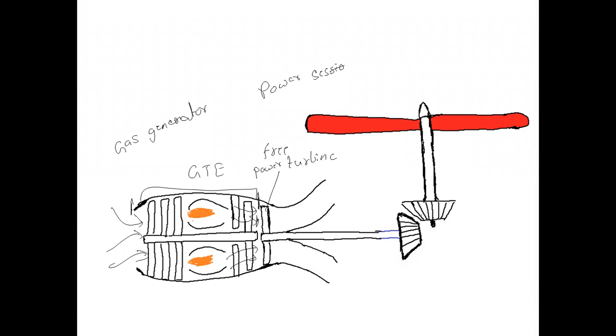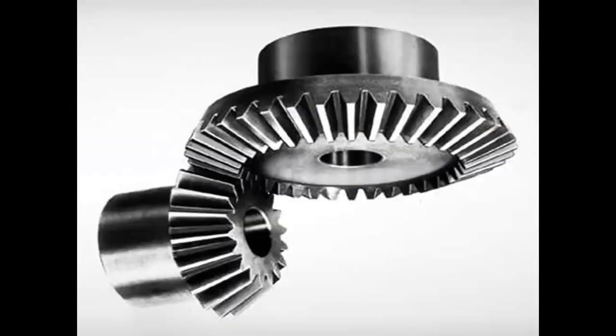To turn the transmission to a 90-degree angle—see, here we are changing the angle—so when we are changing the angle to 90 degrees, we use a special type of gear called a bevel gear. These are the bevel gears.